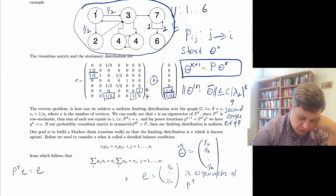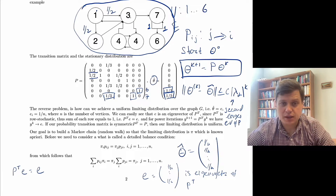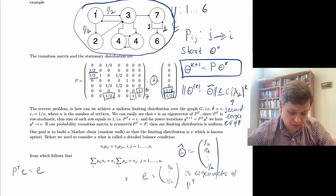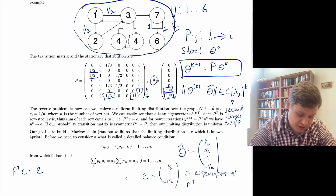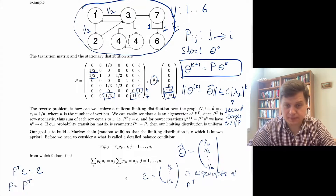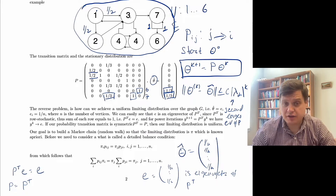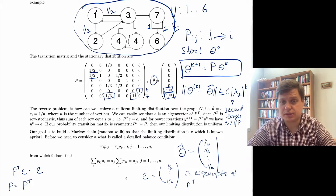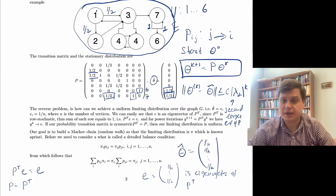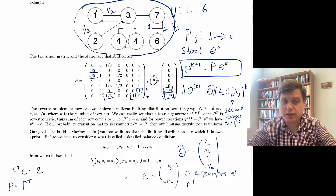So we know that P-transpose times e equals e — that's an eigenvalue relationship. What we want is for our matrix P to equal P-transpose, meaning we want to find a symmetric matrix. If you have a symmetric matrix, then the stationary probability distribution of a random walk on the graph with such a transition probability matrix is uniform — and that's essentially what we need.